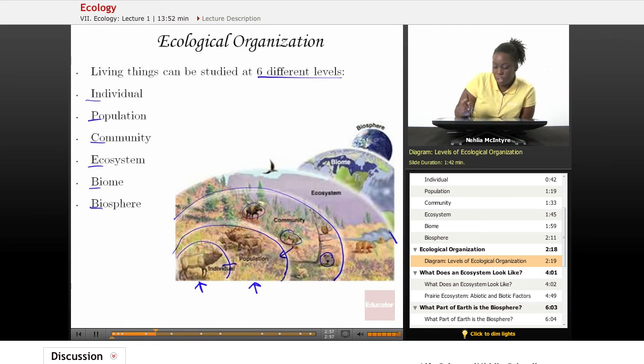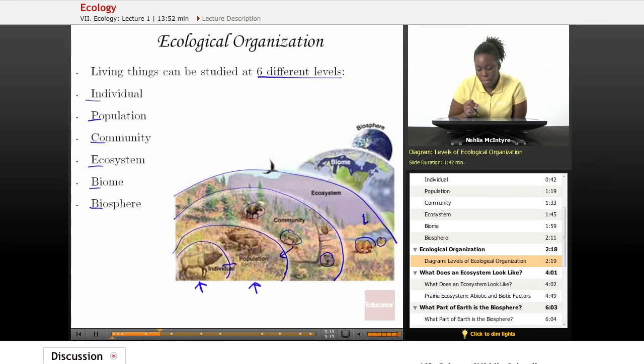And then we have an even larger group, which is the ecosystem. And the ecosystem includes not only the different communities or populations of animals, but also includes the nonliving structures or parts of the environment, such as the atmosphere, other organisms like plants and animals, water. So the ecosystem just includes the environment, the different things in the environment that help the species to survive.